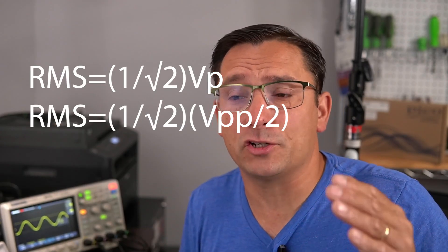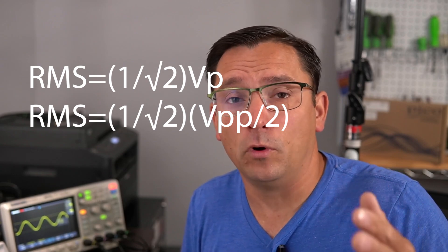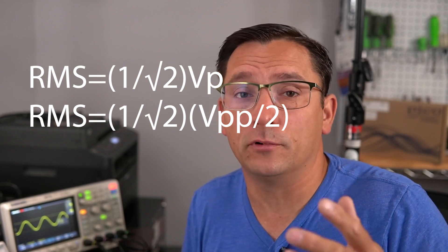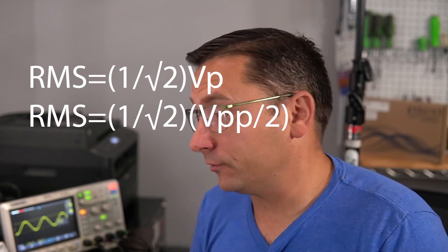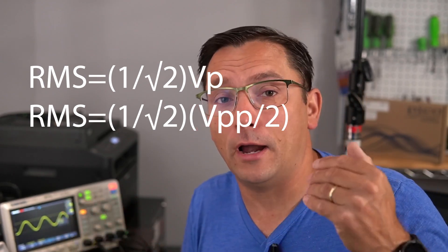Root mean square is actually, there's a formula for it. It's one over the square root of two times your peak voltage or voltage peak. Guys, mathematically that works out. I'm not so concerned with mathematics, just trying to expose you guys to some very basic things.